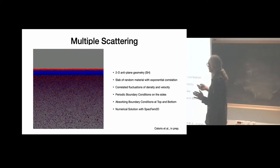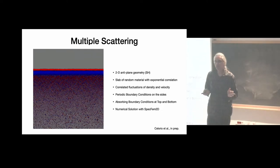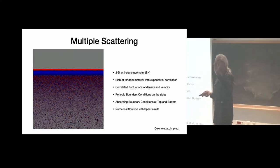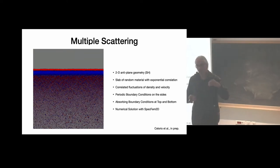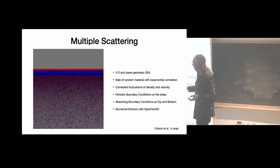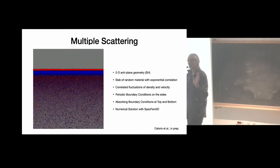To extract the coherent component, we take an ensemble average of the wave field — making many realizations of the random medium and computing a standard average. The incoherent part has lost its phase relation with the incident wave because it changed direction and has a different path length, so its particular phase change depends on the specific realization of the random medium. The ensemble average therefore cancels the incoherent arrivals and isolates the coherent part.